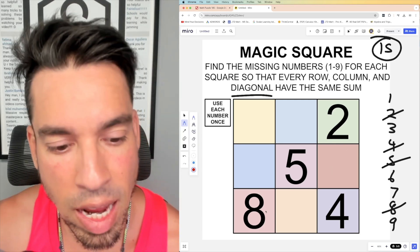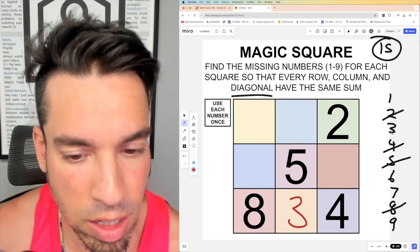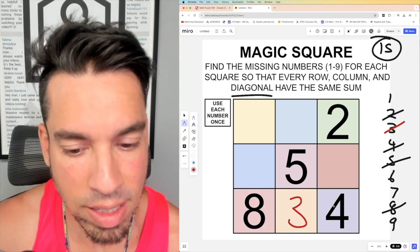Now we can start to figure out the missing squares. Since I know that eight plus four is 12, to get to 15 I need three right here, so three is out. Then I know I have two and four; two plus four is six, to get to 15 we need a nine, so nine goes right here.